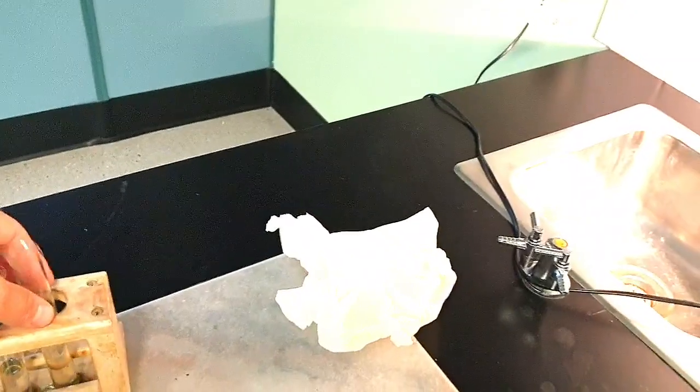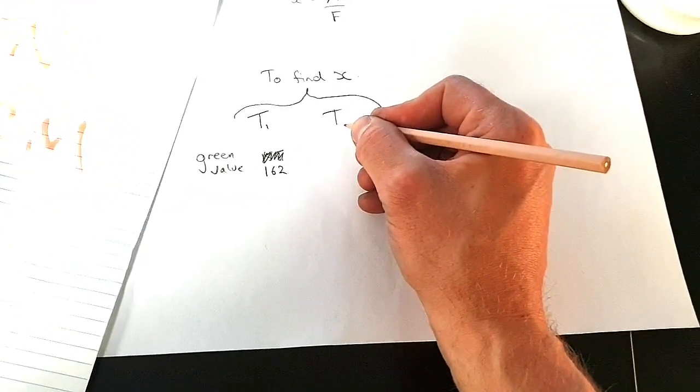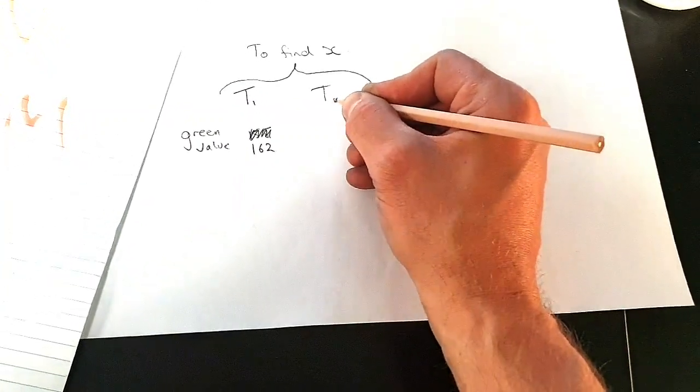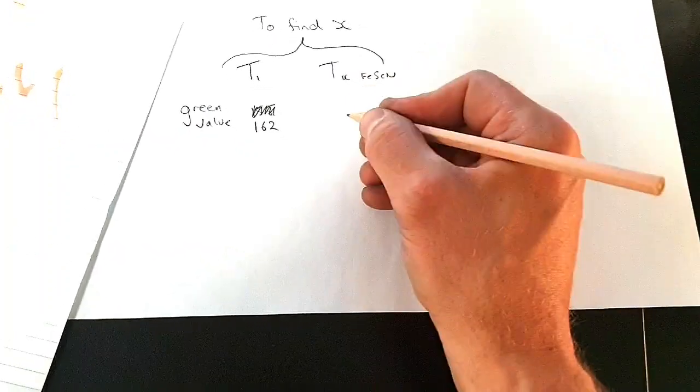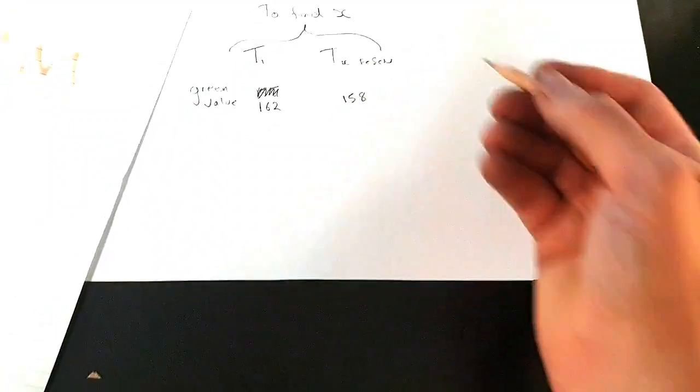Now, this is the concentrate. The final one. This is what we want to test. So, I'll go ahead and test that. And we'll see what we've got. So, that was just a little bit darker. It doesn't look like much is in it. That number was 158.